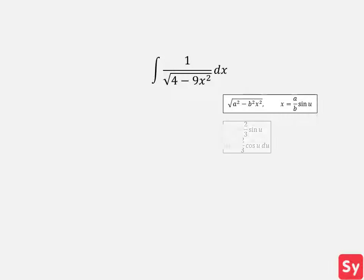the square root of a squared minus b squared times x squared. So, we will set x equal to 2 thirds times sine of u and that means dx equals 2 thirds times cosine of u du. Now we will substitute these into the integrand.